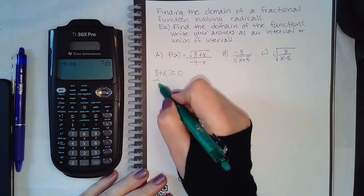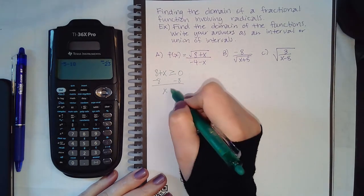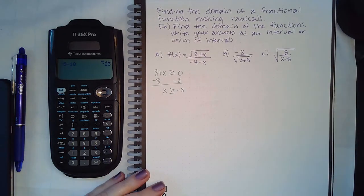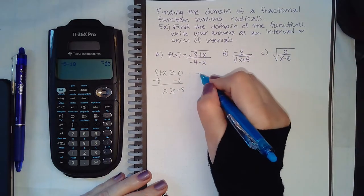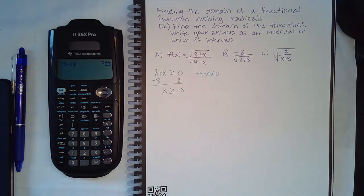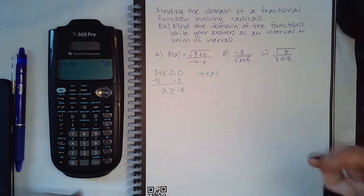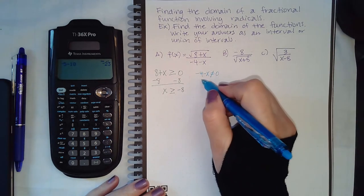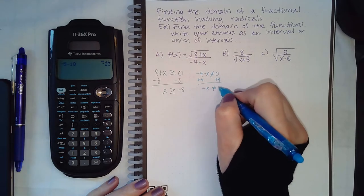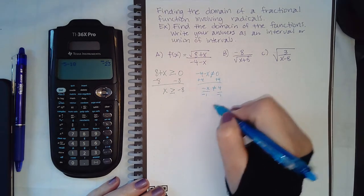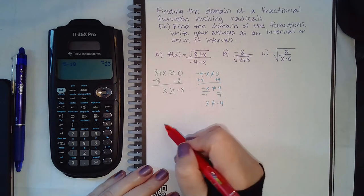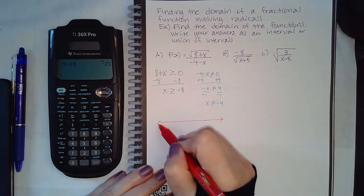So this has to be positive or equal to zero, which means that x has to be greater than or equal to negative eight. However, I also know that my denominator can never equal zero, because if it does then it causes the fraction to be undefined. So I'm going to add four to both sides to solve for x and divide by negative one to continue solving for x so that I get x cannot equal negative four.